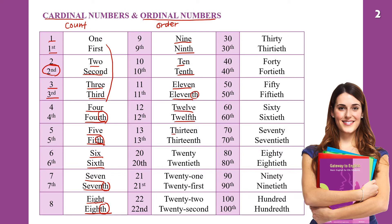Then 12th, 13th, 14th, 15th, 16th, 17th, up to 20th. And 20th spells T-W-E-N-T-I-E-T-H.